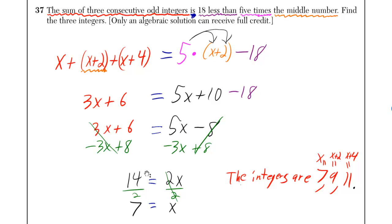What up? Sum of three consecutive odd integers. If the first integer is x, then the next one is x plus 2. Think about that for a minute. If the first one was 3, the next one would be 5.